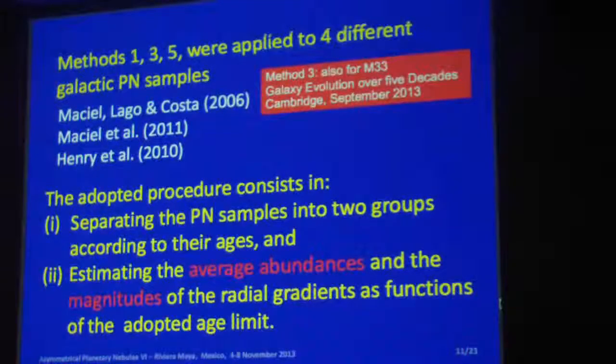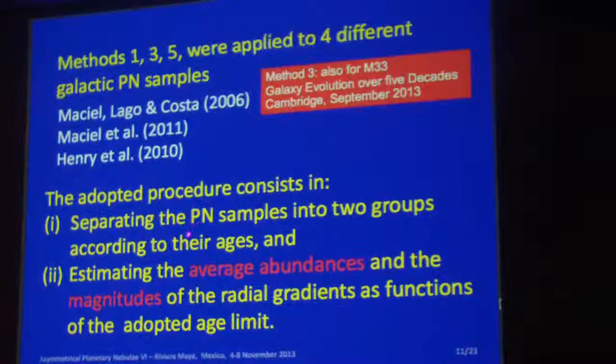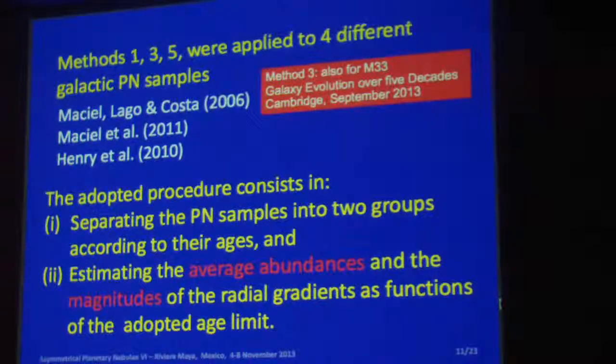We have applied this to different samples. Actually, method three was also applied to planetary nebulae. We just presented that in the conference. The basic principle is like this: we just separated the sample in two different groups, old and young. We defined an age limit and we compared the gradient from both groups.